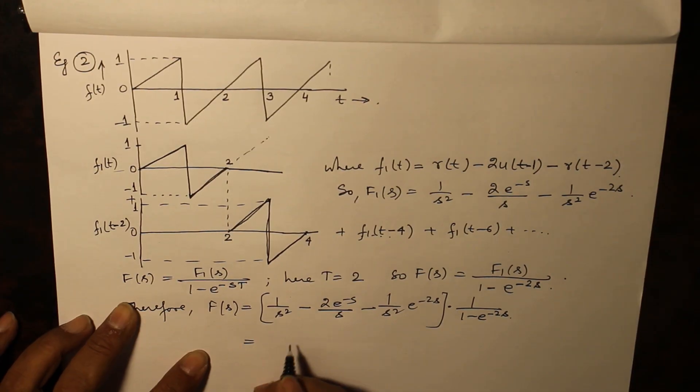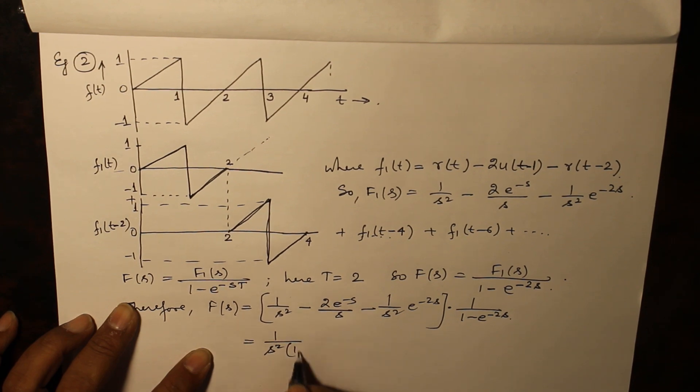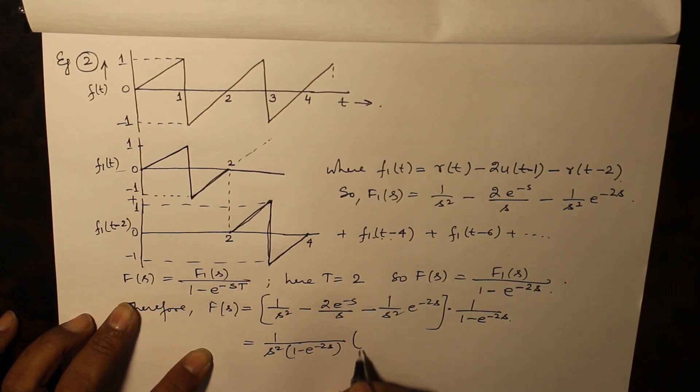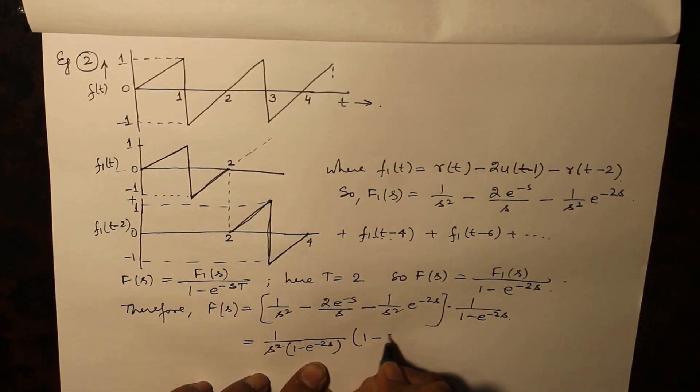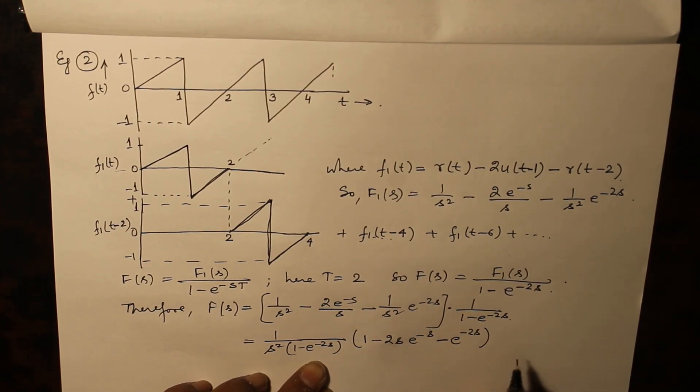By taking 1 over s squared outside, we have 1 over s squared, and we have 1 minus 2s e raised to the power minus s minus e raised to the power minus 2s. This is our answer.